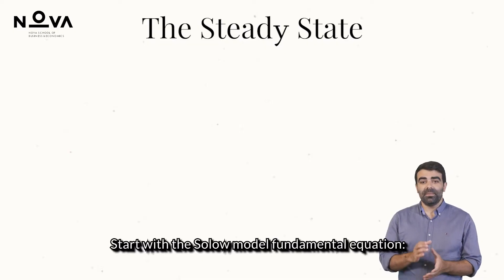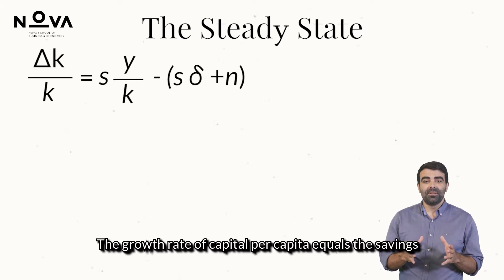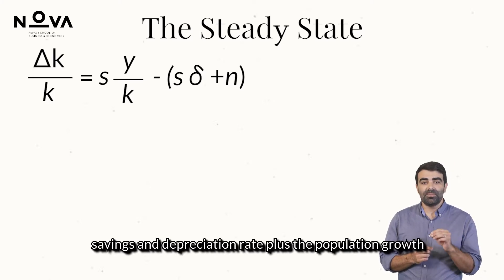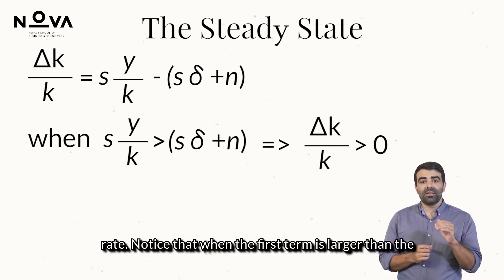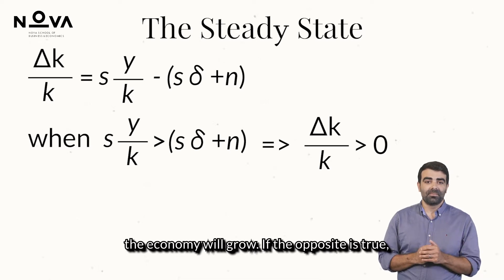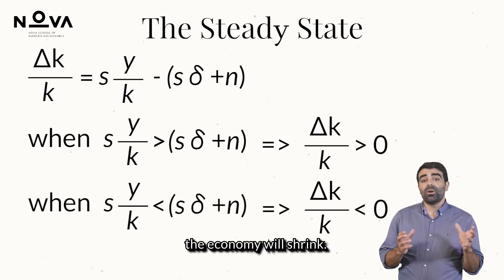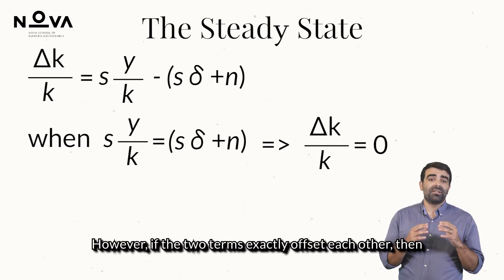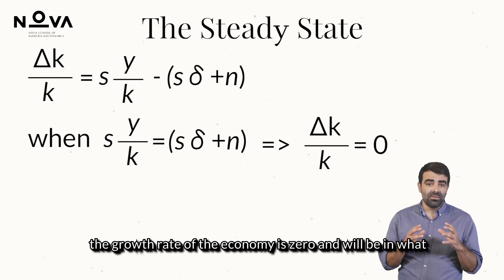Start with the Solow model fundamental equation. The growth rate of capital per capita equals the savings rate times the average product minus the product of the savings and depreciation rates plus the population growth rate. Notice that when the first term is larger than the second, the growth of capital per capita is positive and the economy will grow. If the opposite is true, the economy will shrink. However, if the two terms exactly offset each other, then the growth rate of the economy is zero and we will be in what we call the steady-state.